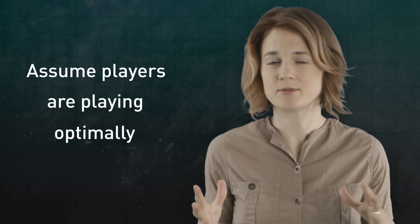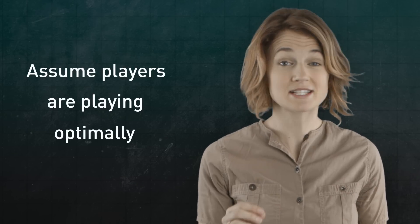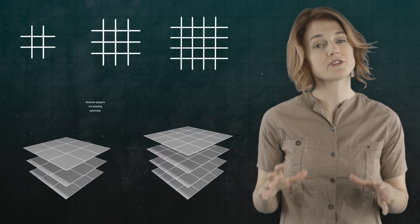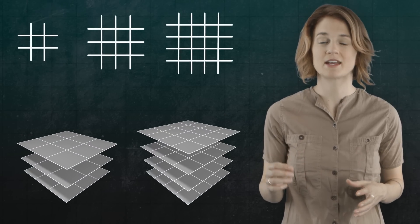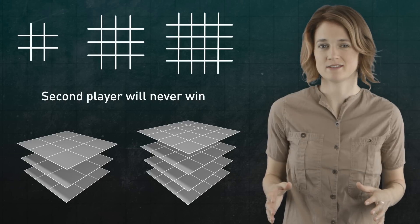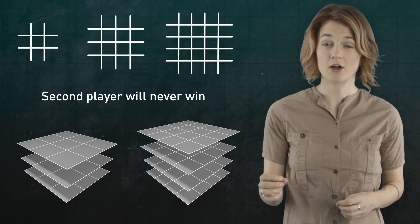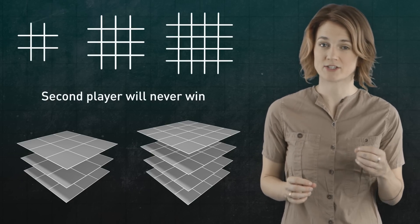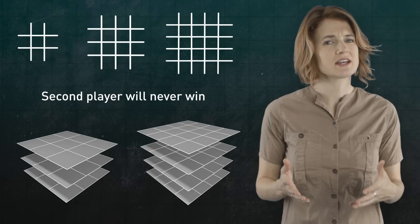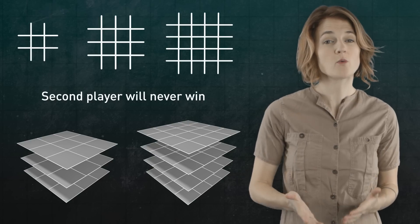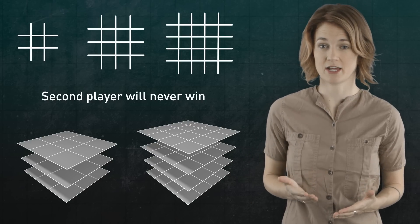They have unlimited computational powers to determine the best possible move on each turn. In all the different sized tic-tac-toe boards we'll examine, the second player can never win. The game will either be a draw or the first player will have a winning strategy. Essentially, this is because the first player could always steal the strategy of the second player.